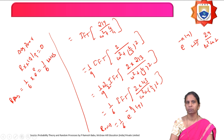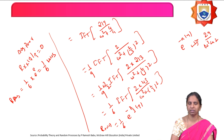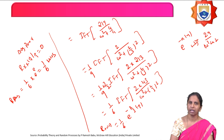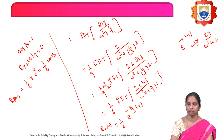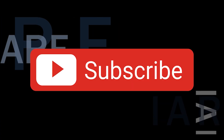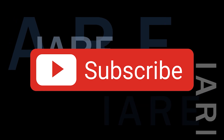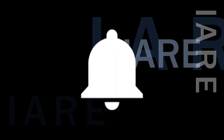So, for a given problem, if they give the autocorrelation function, you can calculate the power spectrum and the average power. Similarly, if they give the power spectrum, you can calculate the autocorrelation function. The relation between the power spectral density and the autocorrelation function is called the Wiener-Khinchin relation. Thank you — like, share and subscribe, and hit the bell icon for more updates.